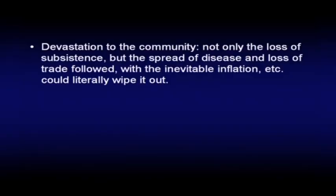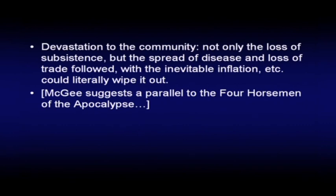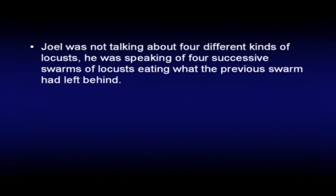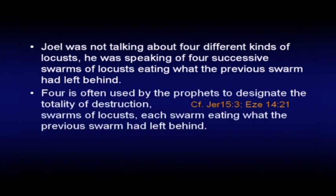The devastation to the community occurred not only because of the loss of subsistence, but the spread of disease, loss of trade, inevitable inflation — it could literally wipe out an entire civilization. J. Vernon McGee makes a suggestion that these four locusts might suggest a parallel to the four horsemen of the apocalypse. There isn't a direct linkage I see, but four does seem to be a number of completion of a certain kind of judgment. I believe Joel was speaking of four successive swarms of locusts, each eating what the previous swarm had left behind. Four is often used by prophets to designate the totality of destruction — Jeremiah 15, Ezekiel 14, elsewhere.